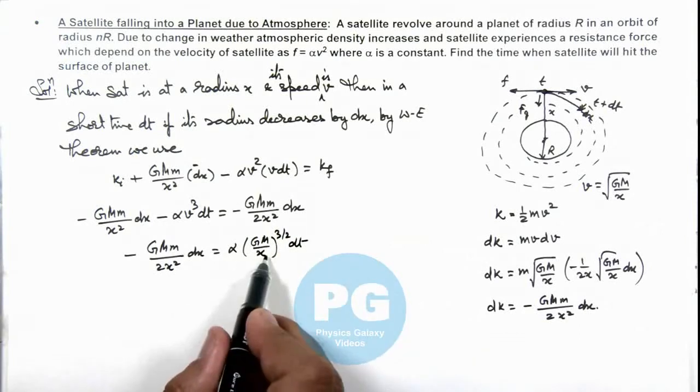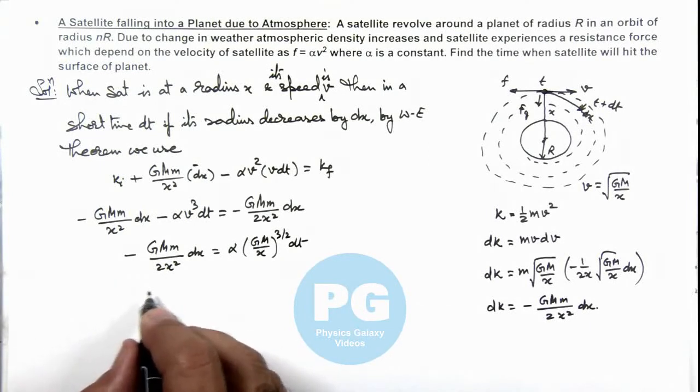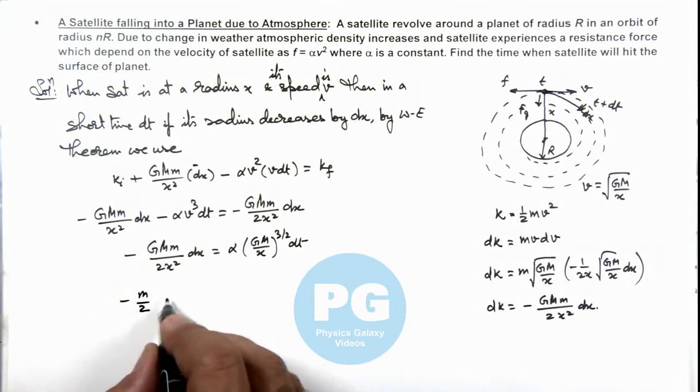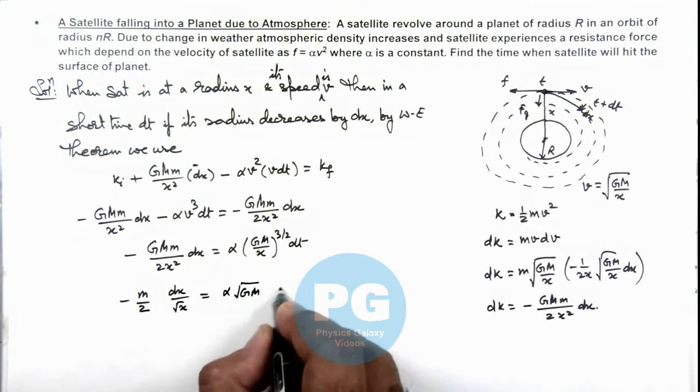Further this 1/x gets cancelled out over here, and finally we are having the result as -m/2 dx/√x is equal to α√(GM) dt.